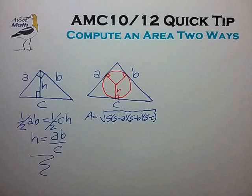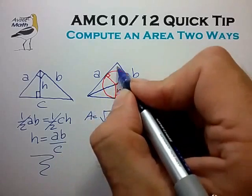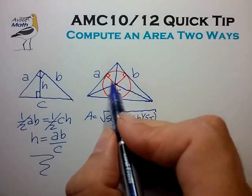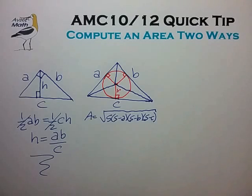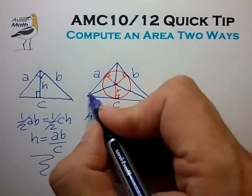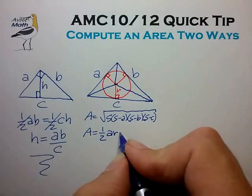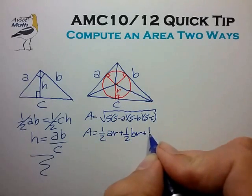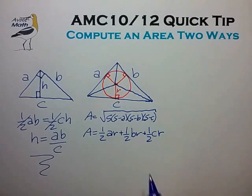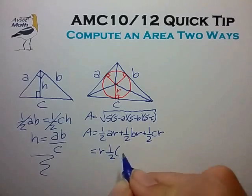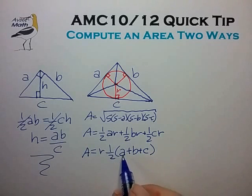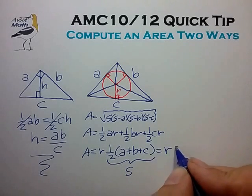A second way of calculating the area is to realize we can break up the triangle into three smaller triangles, each with a base given by the side lengths of the triangle and a height given by the radius of the inscribed circle. So we compute the area as one half base A times R, plus one half base B times R, plus one half base C times R. Pulling out R, the area is given by R times one half A plus B plus C, which we recognize as the semi-perimeter S. So the area is simply R times S.